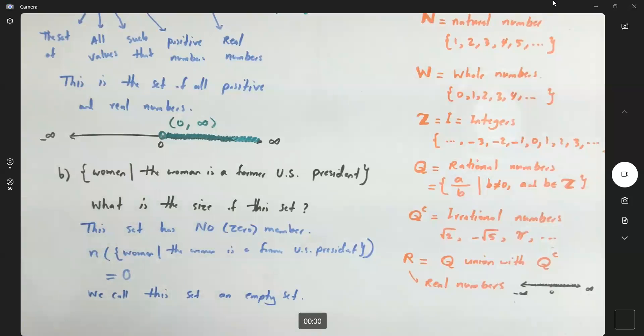We use these two symbols: the empty set symbol or curly brackets with nothing in it. These represent an empty set. An empty set has zero members.